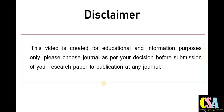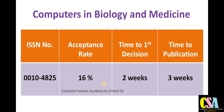I always suggest that before submission of your research paper or manuscript, explore each and every journal at your level also. The first journal title is Computers in Biology and Medicine. In this video we will discuss only Elsevier publisher journals, which are Scopus index and SCI index journals. The ISSN number of this journal is 0010-4825. The acceptance rate of this particular journal is 16 percent.